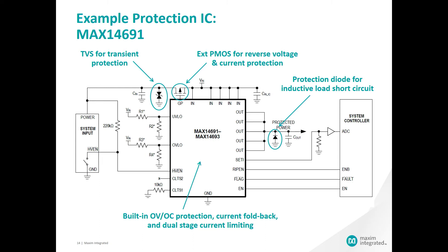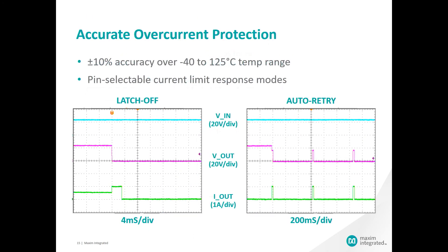There is one difference to review in more detail, and that is the current limit response time. The MAX14691 has an integrated sense resistor and FET which allows Maxim to guarantee an accurate plus or minus 10% current limit accuracy for safe startup operation. It offers two pin-selectable current limit response modes: one, latch off after an overcurrent event, or two, auto retry after the blanking time elapses, giving the designer flexibility and control.